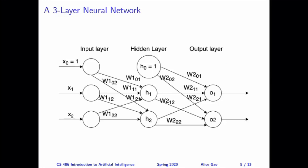Input layer has two real input values. Then hidden layer, there are three nodes, but one of them, H0, is a dummy one. And then in the output layer, we have two output nodes.